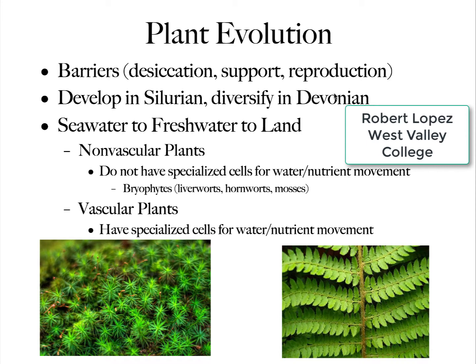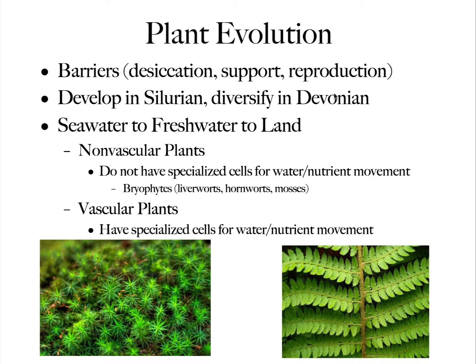Hello and welcome back to Historical Geology. This is the latter part of Chapter 13 on Paleozoic plants. Plants face a similar barrier that animals face in going on the land: they had to deal with desiccation, the support against gravity, and the way to reproduce in an aerial environment out of the water.